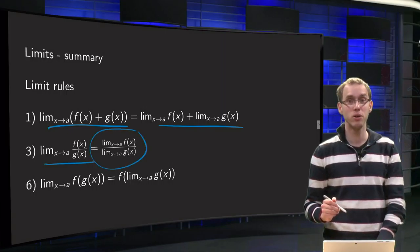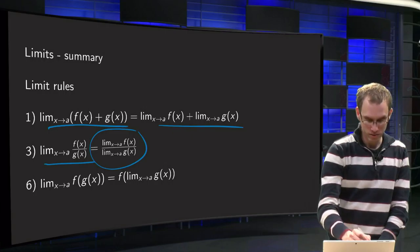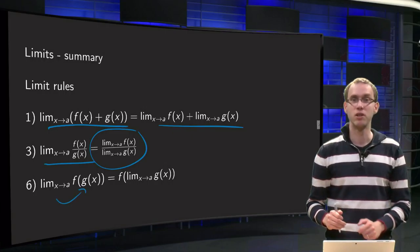The quotient rule is provided the denominator is not equal to zero, and we can take limits inside continuous functions.